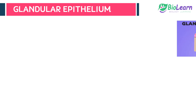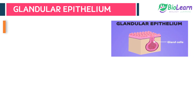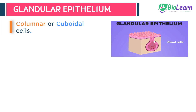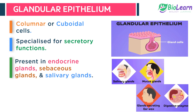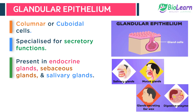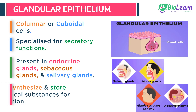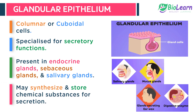Glandular epithelium consists of columnar or cuboidal cells which are specialized for secretory functions. The glandular cells are found in the endocrine glands, sebaceous glands, and salivary glands. These secrete various chemical substances and may also synthesize and store them in the cells.